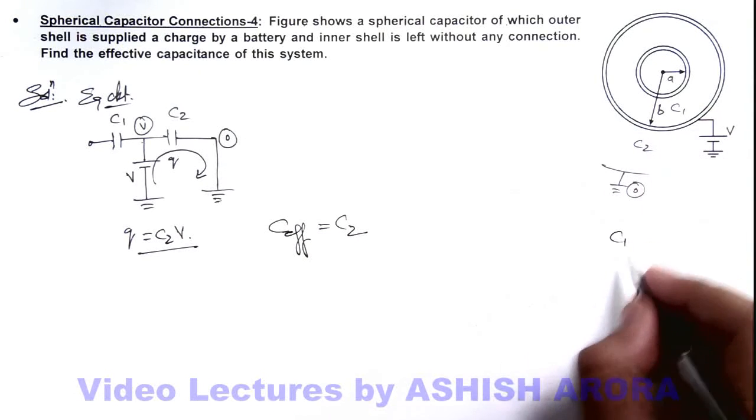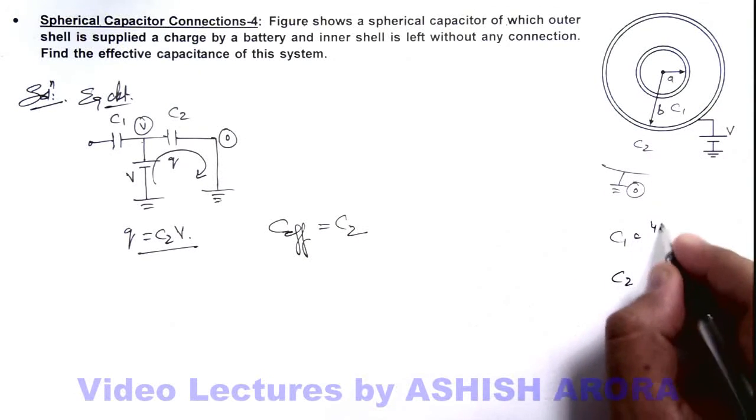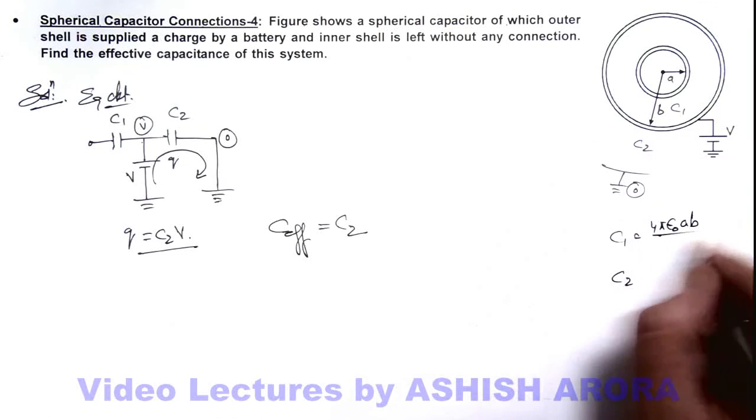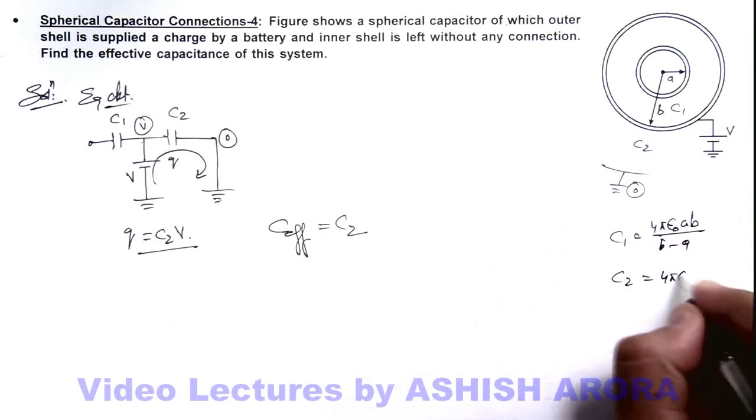The values of C1, C2 are already known to us, which are 4πε₀ab divided by (b minus a), and 4πε₀b.